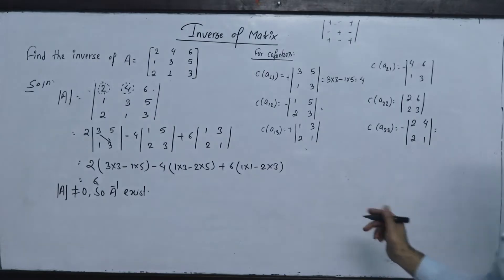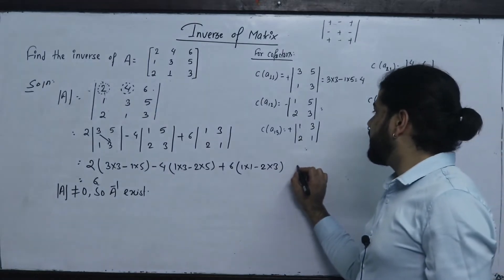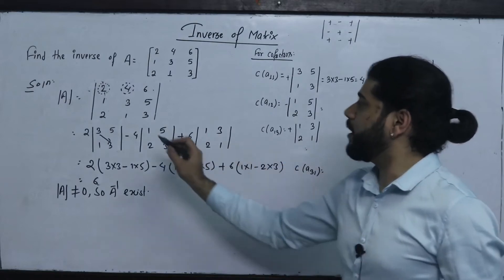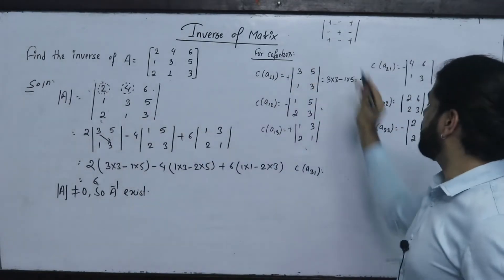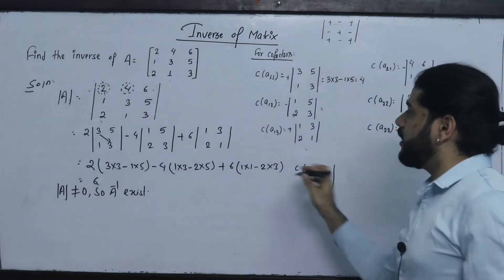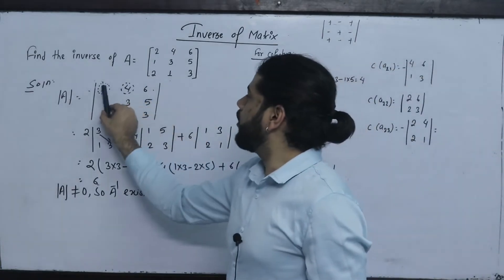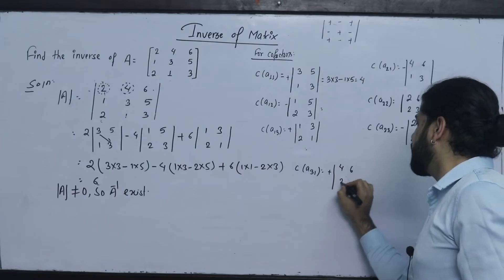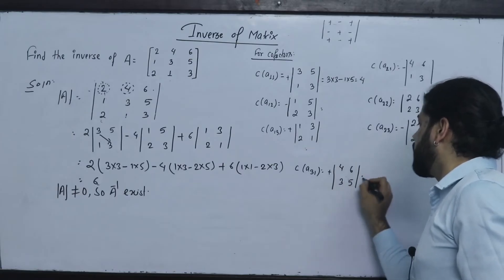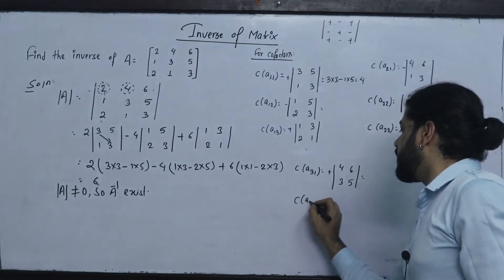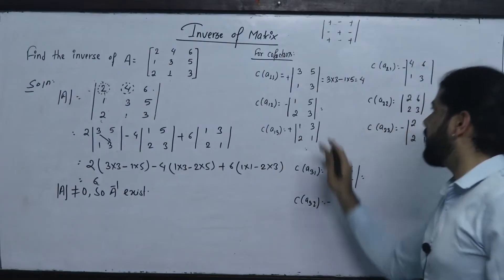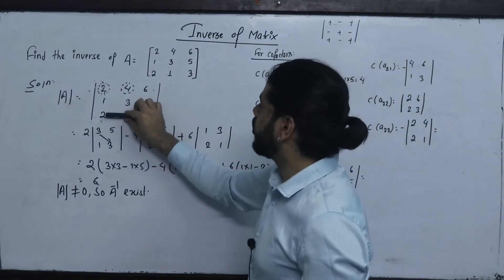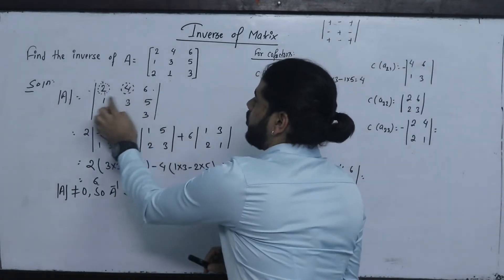For C(3,1): this is a positive term. The sub-matrix contains row or column [4, 6; 3, 5]. For C(3,2): this is a negative term, sub-matrix [2, 6; 1, 5]. For C(3,3): sub-matrix [2, 4; 1, 3].